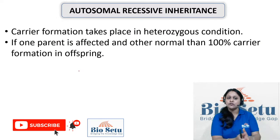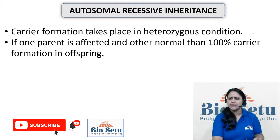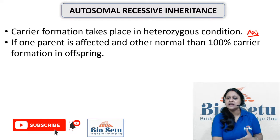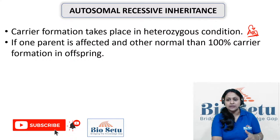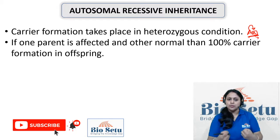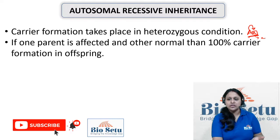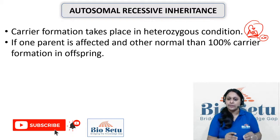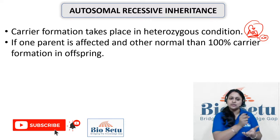The next point is carrier formation, which takes place in the heterozygous condition. When an individual is heterozygous, the recessive allele is not able to express itself because of the dominant allele. However, according to the Law of Segregation, when this allele segregates it has an equal probability of going to the progeny. So the parent with heterozygous genotype is a carrier.